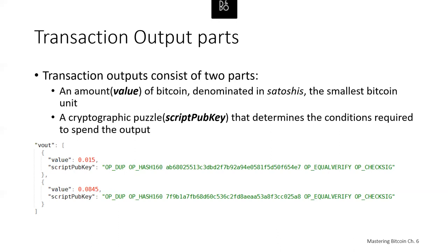Looking at the transaction details encoded in JSON, the outputs are an array list called Vout. Each entry has a value and a script pub key. The transaction has two outputs: one going to Bob from Alice and the other as change going back to Alice. The value is the amount and the script pub key specifies what someone has to do to spend that amount.